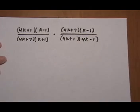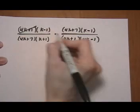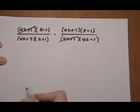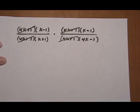Now we can look for canceling. So let's see. We've got 4k plus 1, top and bottom. 4k plus 7, top and bottom. And that's it.